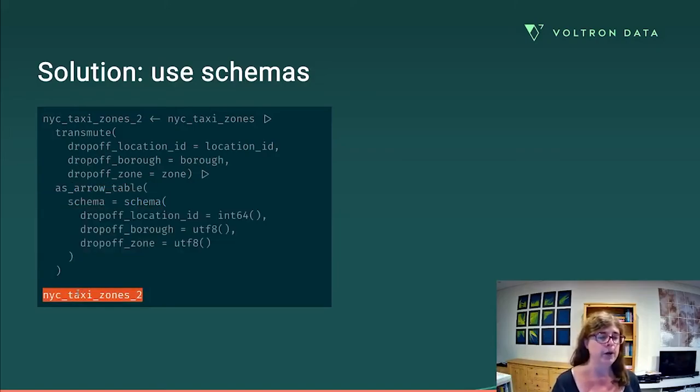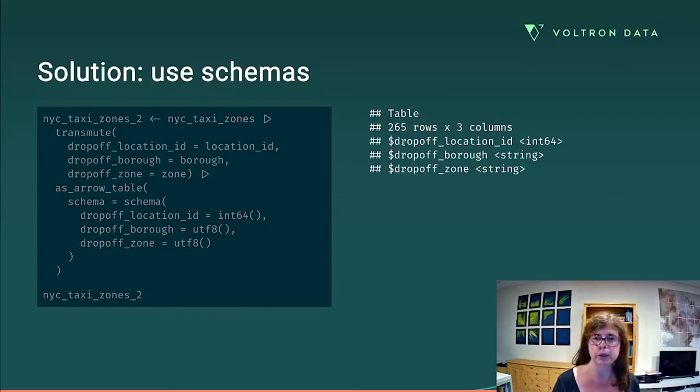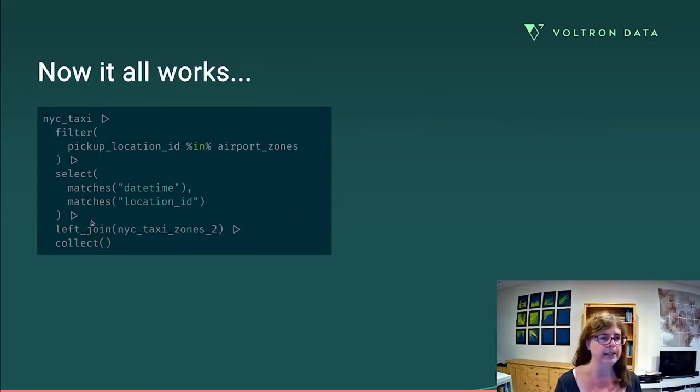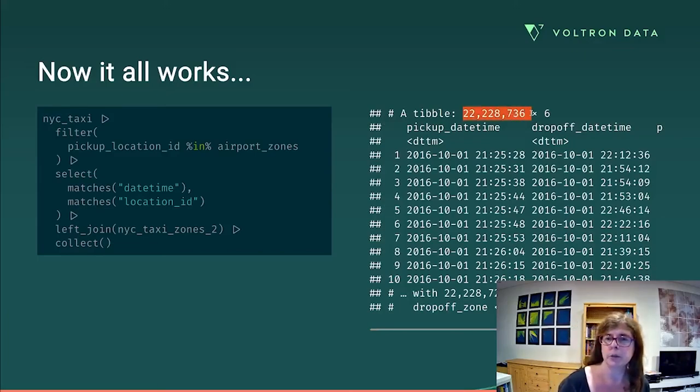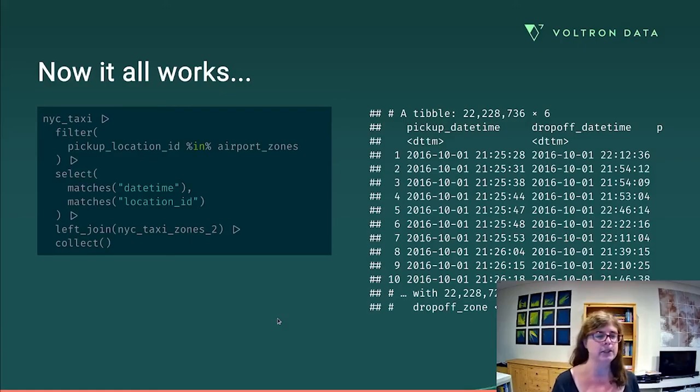I'm going to convert it to an arrow table and I'm going to apply the schema that I just wrote down, which means that when this thing gets created, it's going to have the variables I care about, right? So the drop off location ID, which now has the same name as it does in the original dataset, but the important thing is that it's now integer 64. So when I go and do this, my left join statement is now nice and simple. I'm just left joining NYC taxi on NYC taxi zones. I collect that and it works really, really nicely. There's 22 million rows in that, which is a little big for my liking, but we can take that and we can do things with it.